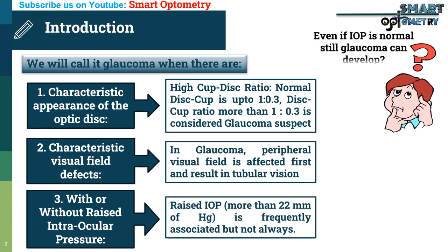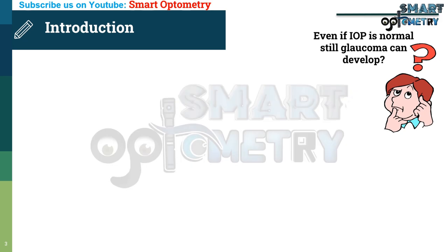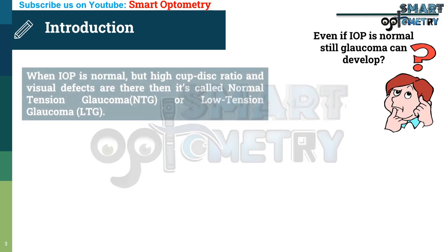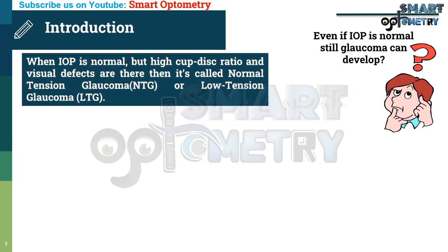You might be thinking: even if IOP is normal, can Glaucoma still develop? Yes. When IOP is normal but high cup-disc ratio and visual field defects are present, then it is called Normal Tension Glaucoma or Low Tension Glaucoma.